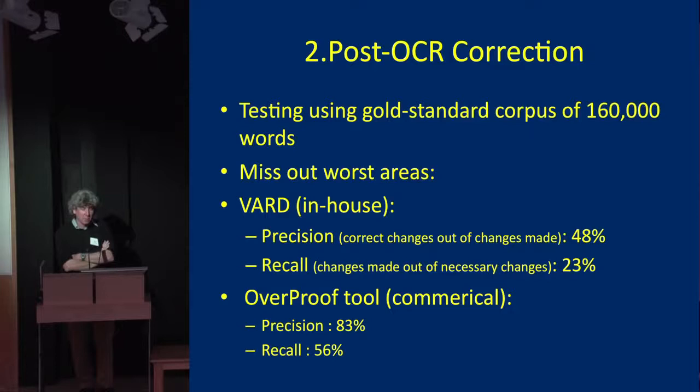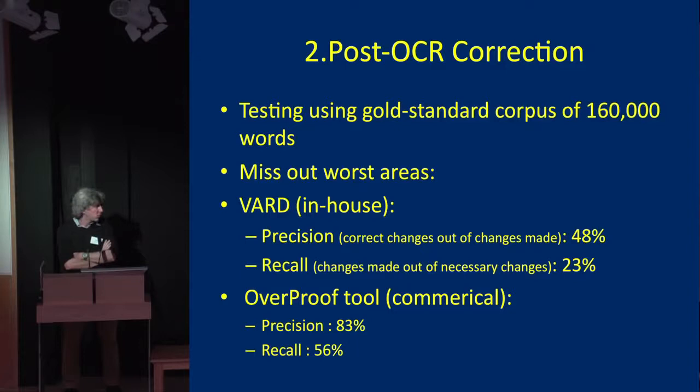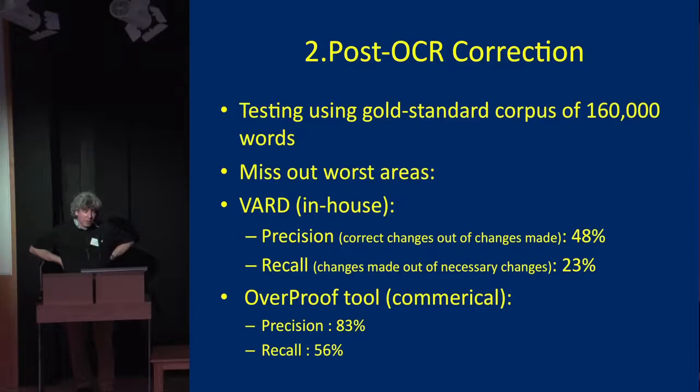We also tested a commercial tool called Overproof, assuming it wouldn't be much better — but the statistics showed it is actually pretty good: it's correcting over half the mistakes and doing them properly. That raises further questions: if it's a commercial company, what is it doing with the data, how much will it charge for a collection of this scale, and who is going to pay for it? These are questions still to be addressed.